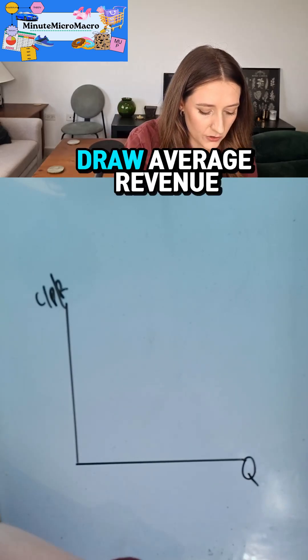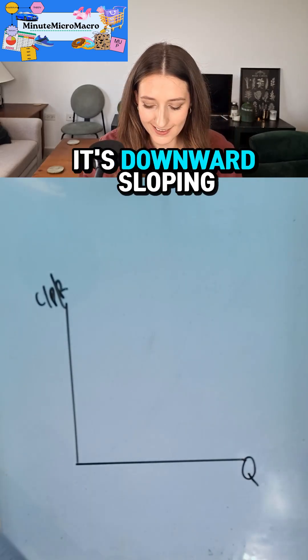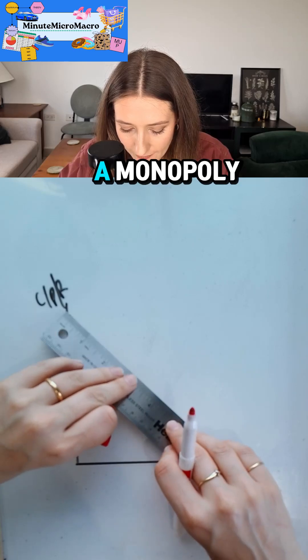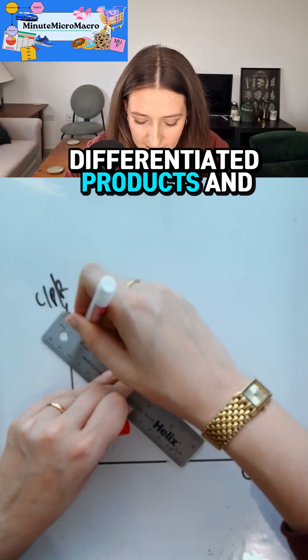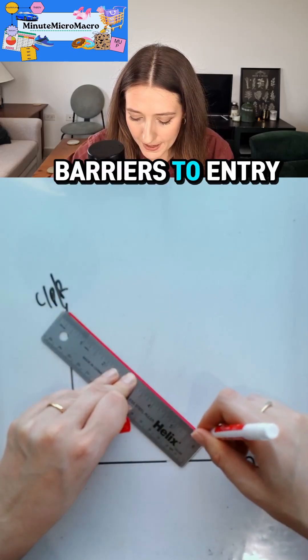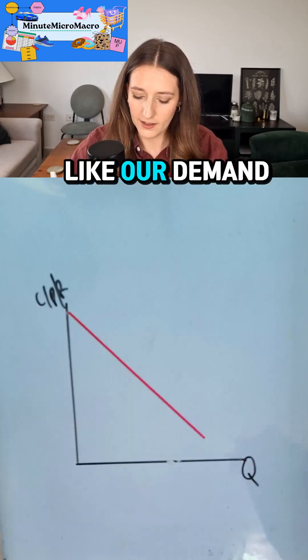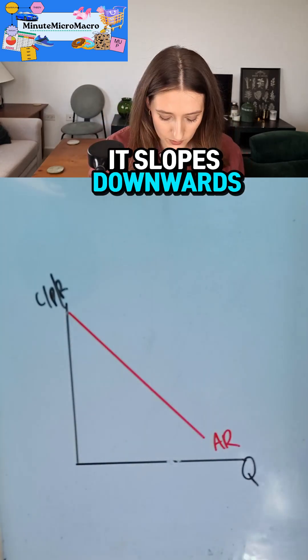We need to draw average revenue to start with. It's downward sloping because we have a monopoly — they have differentiated products and barriers to entry — and it is like our demand curve. It slopes downwards.